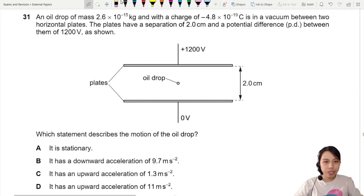An oil drop of mass 2.6 times 10 to the negative 15 kg and a charge negative 4.8 times 10 to the negative 19 is inside a vacuum between two plates. Vacuum means no air resistance. The plates have separation of 2 cm and a potential difference 1200 volt from 1200 drop down to zero.